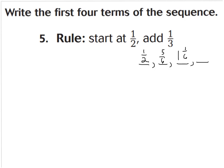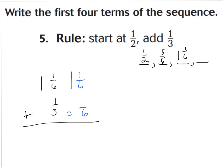Now let's find the fourth term. Our rule is to add 1 third to 1 and 1 sixth. 1 and 1 sixth plus 1 third — the denominators are different, but the least common multiple of 3 and 6 is 6. So I'll leave 1 and 1 sixth alone, and 1 third becomes 2 sixths. Adding: 1 whole and 1 sixth plus 2 sixths equals 1 whole and 3 sixths. And we know 3 sixths can be simplified to 1 half, so the fourth term is 1 and 1 half. Those are our first four terms following the rule of adding 1 third.